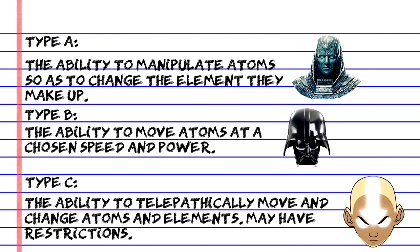However, a persisting theme in Type C is that individuals with those abilities have restrictions as to what elements and atoms they can manipulate. Now that we've identified the categories of atomic manipulation, let's take a look at how this could happen in real life. Just remember — we're not exploring why, we're exploring how.